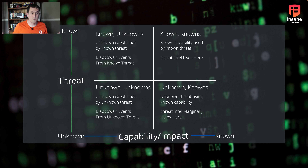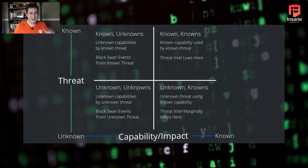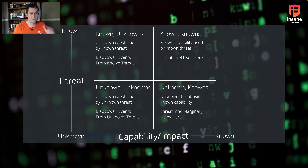When you get into known unknowns, these are unknown capabilities by known threats. This is very important to understand because even with perfect threat intel from the best source or subscription you can pay for, this box is always going to exist. You're not going to know about every capability a threat has — particularly nation states, because nation states literally spend millions and billions of dollars in counterintelligence to prevent you from knowing exactly what they're using.